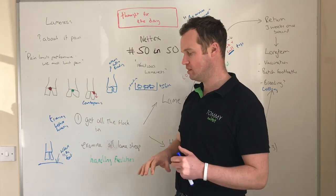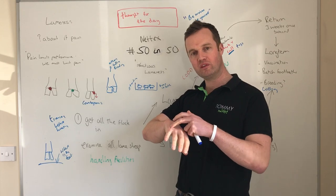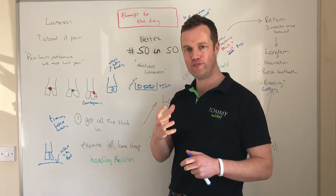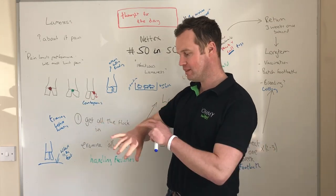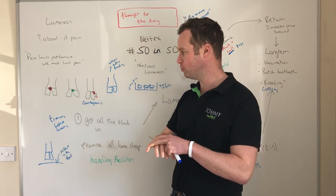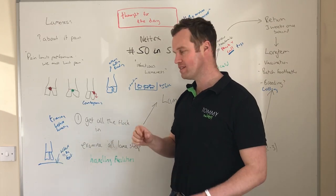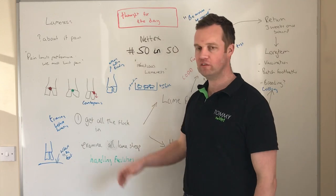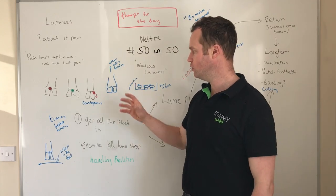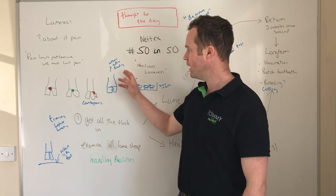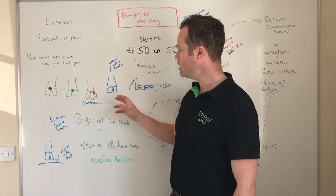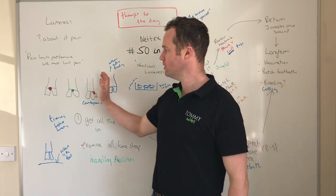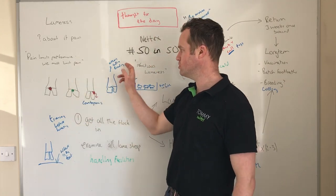The third condition we're seeing a lot more of is CODD — Contagious Ovine Digital Dermatitis. It starts at the top of the coronary band, but often we see the shed of the hoof almost coming off, causing quite severe lameness. There are other causes too — shelly hoof, misshapen feet — but those three infectious causes represent about 90% of the lameness we see.